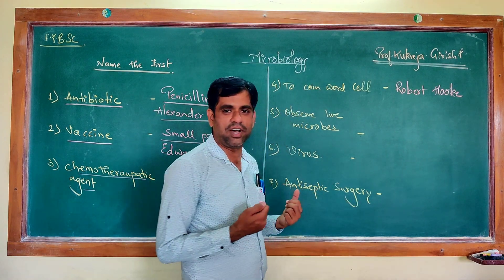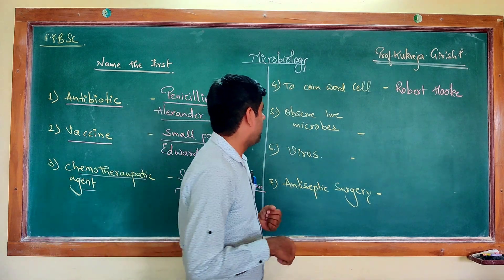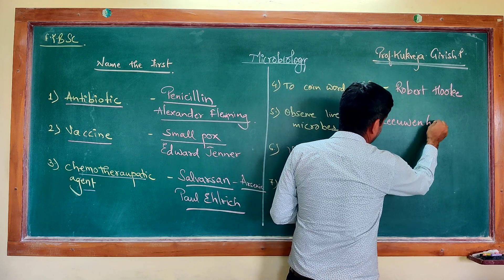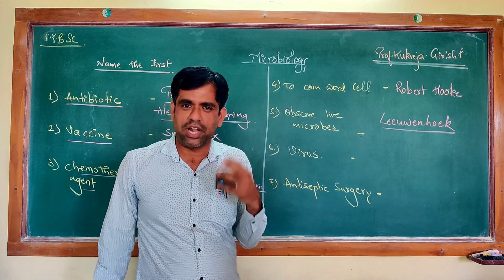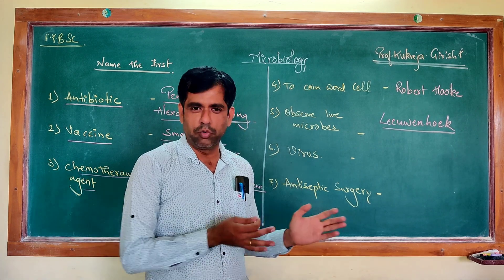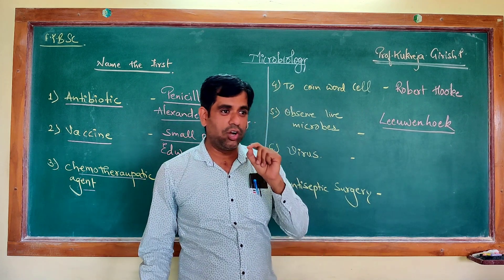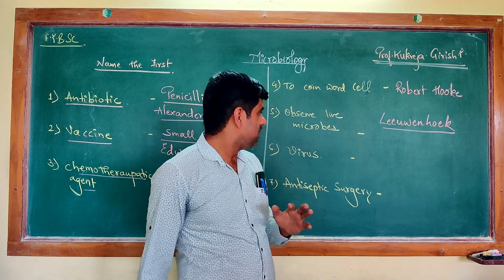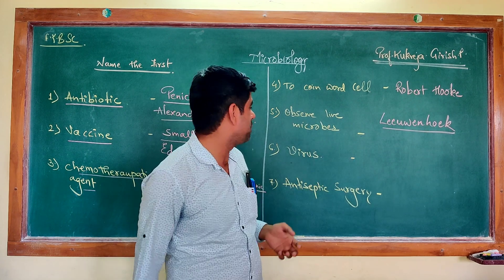Who was the one to observe live microorganisms? He is also sometimes referred to as the father of microbiology, the one who introduced us to the entire unseen world of microbes — none other than Antonie van Leeuwenhoek. He was the first person to observe live microbes. At that time only two categories existed — plants and animals — so he called them animalcules, and reported all his discoveries to the Royal Society of London. We will be discussing this further in upcoming videos.